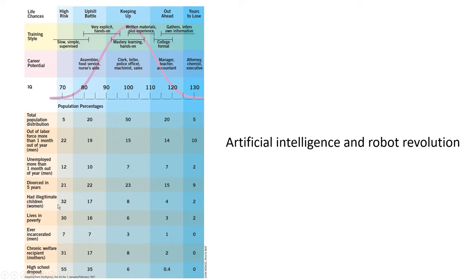Over 30% — nearly a third — of very low IQ women have illegitimate children. Very few high IQ people have illegitimate children. A lot of low IQ people live in poverty; very few high IQ people do. Incarceration rates are also higher for low IQ men. A lot of white collar crime is probably going on at the high IQ end. Many low IQ mothers are chronic welfare recipients. A huge amount of low IQ people drop out of high school. Whereas if you have very high IQ, whether you finish is pretty much up to you.